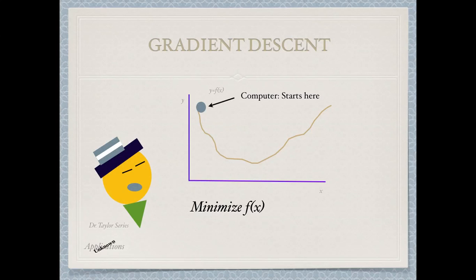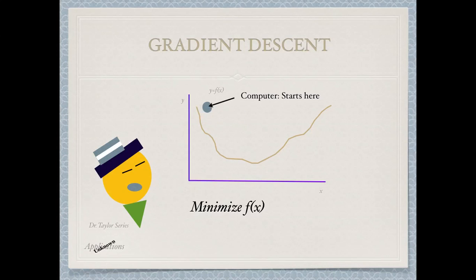You start by letting the computer choose any x value to begin with, then calculate the height of the function — imagine this function as representing some sort of valley. What you then do is look at the tangent of the function at that point. We know that a tangent very closely describes the function locally around that point. So we look at the tangent and ask: is this tangent going down when we go to the right, or going up? In our case, we see that following the tangent we will be going down if we move to the right, which gives us a strong indication that the function becomes smaller if we move right.